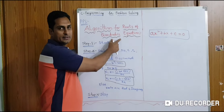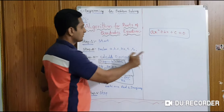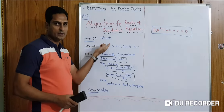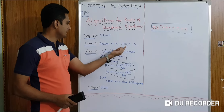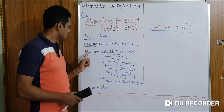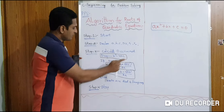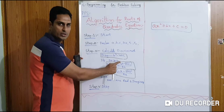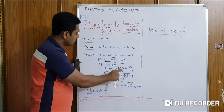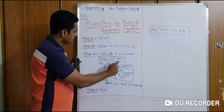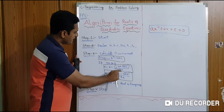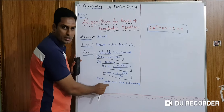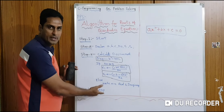Algorithm for roots of a quadratic equation. The quadratic equation is: Ax² + Bx + C = 0. Step 1 is Start. Step 2 is declaring variables A, B, C, discriminant, root1, root2. Step 3 is calculating the discriminant using the formula: discriminant = B² − 4AC. Step 4: if discriminant ≥ 0, then root1 = (−B + √discriminant) / 2A and root2 = (−B − √discriminant) / 2A; else, the roots are real and imaginary. Final step is Stop.